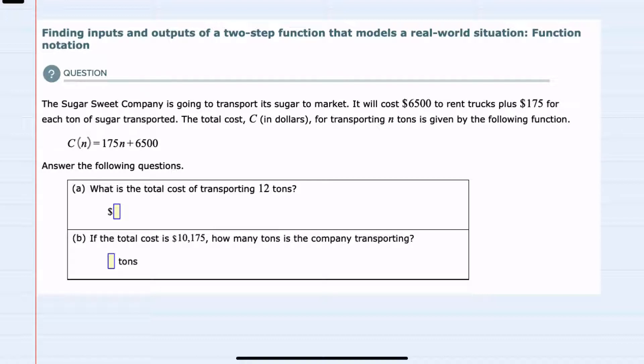We're told the SugarSweet company is going to transport its sugar to market. It will cost $6,500 to rent trucks plus $175 for each ton of sugar transported. The total cost C in dollars for transporting n tons is given by the following function: C of n, where n is the variable for number of tons, is equal to $175n plus $6,500.